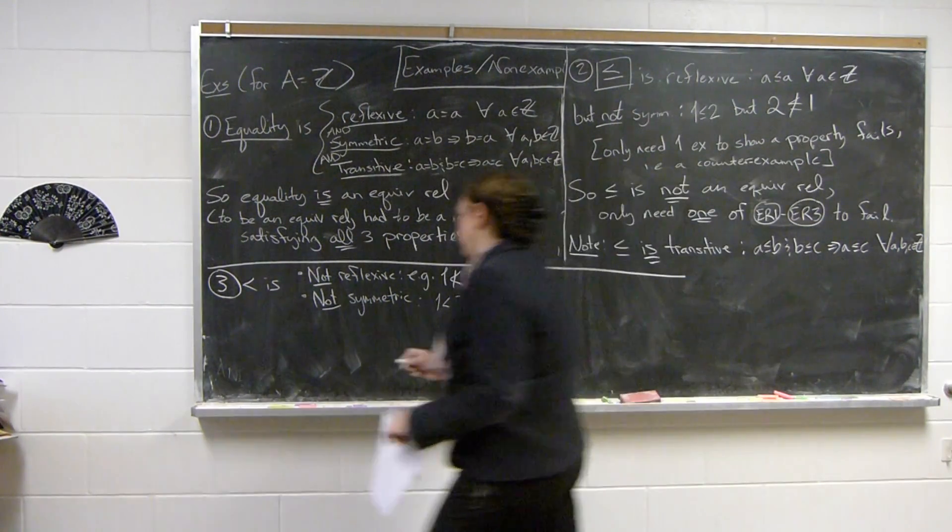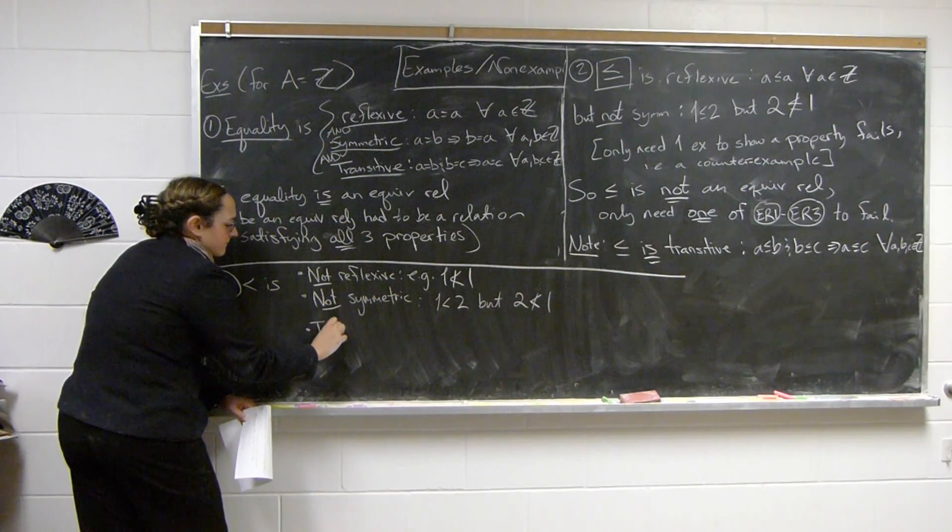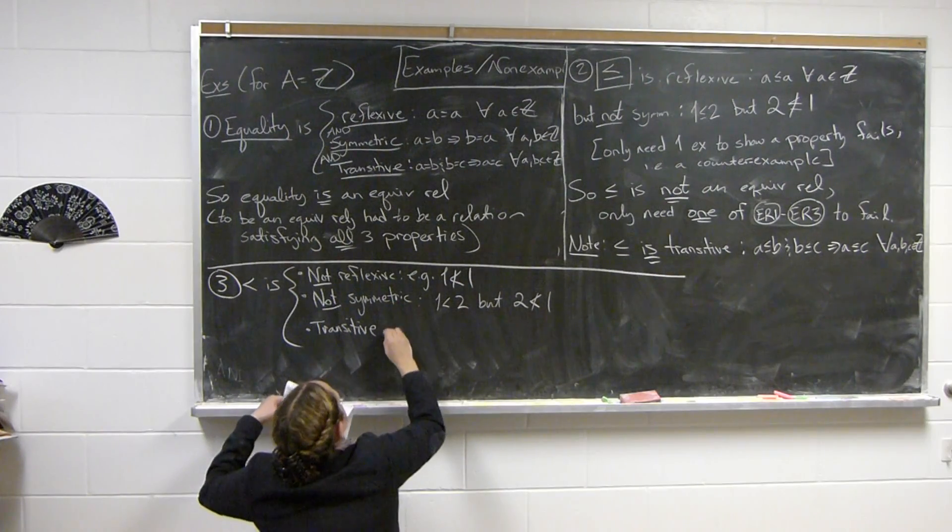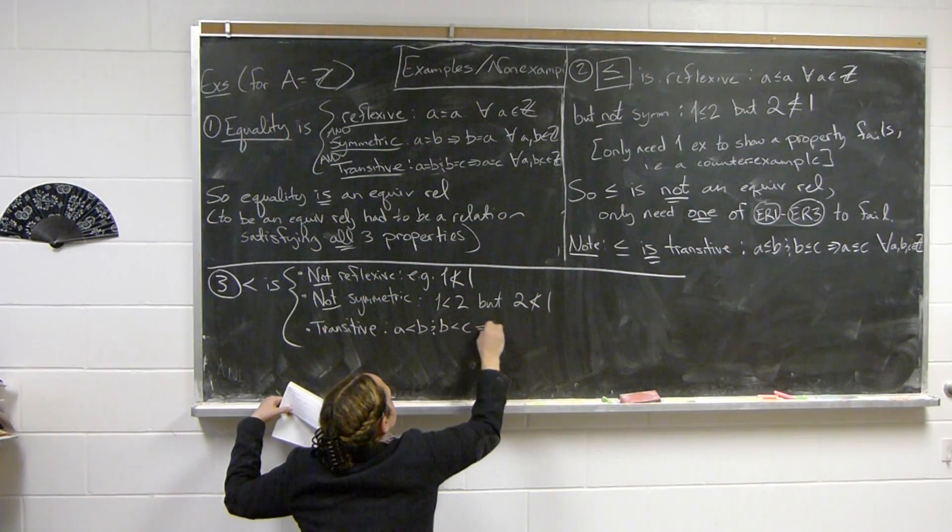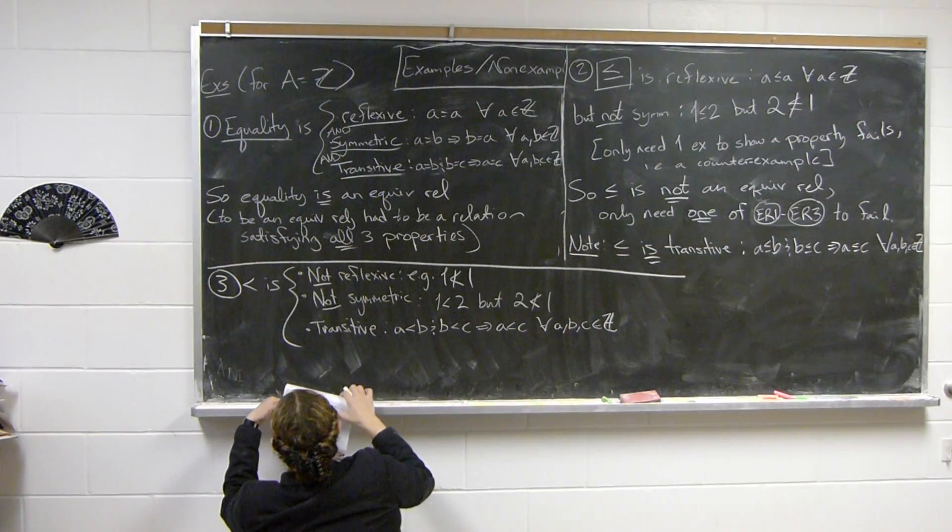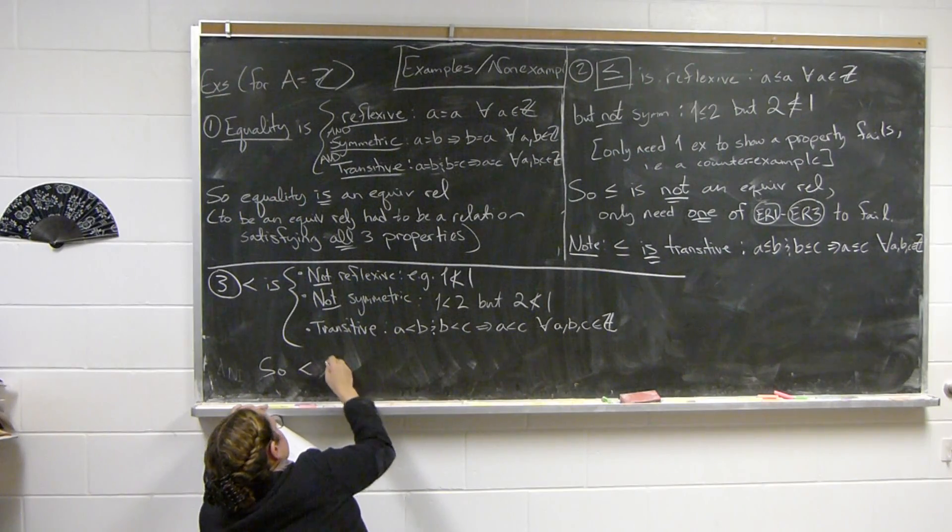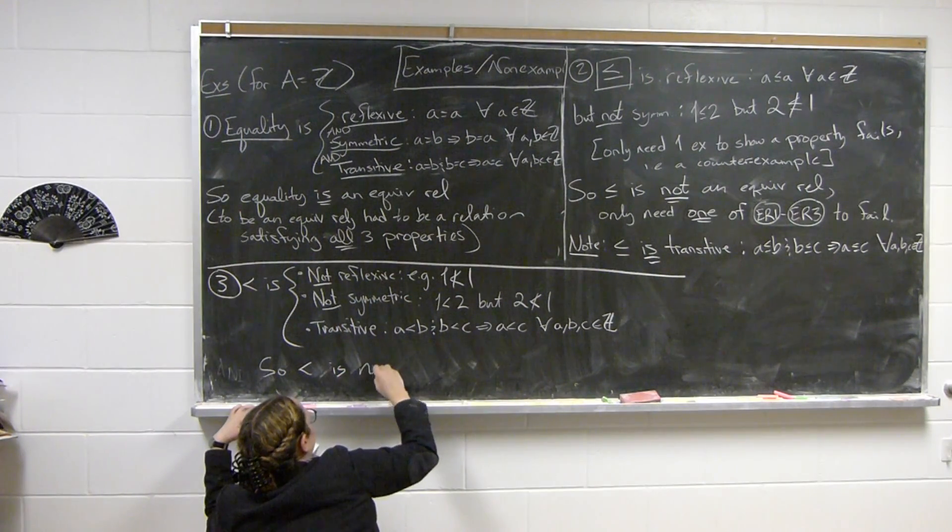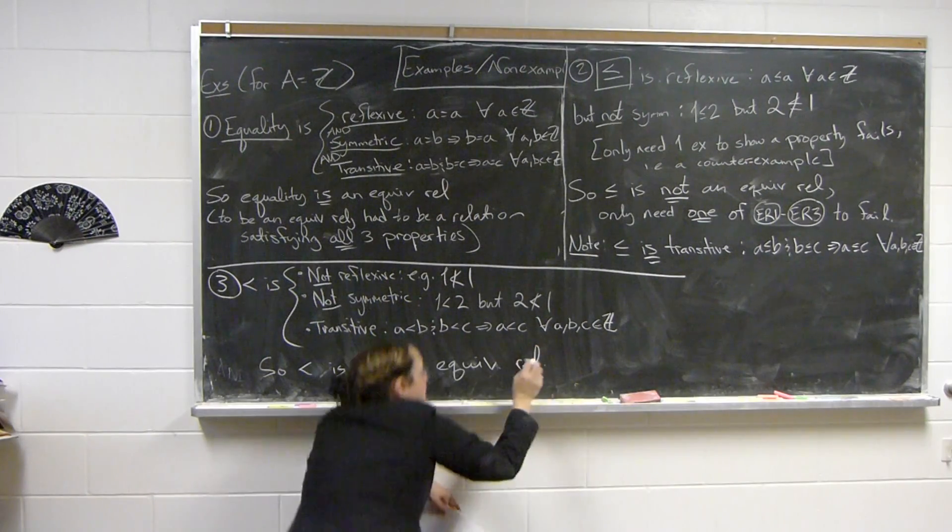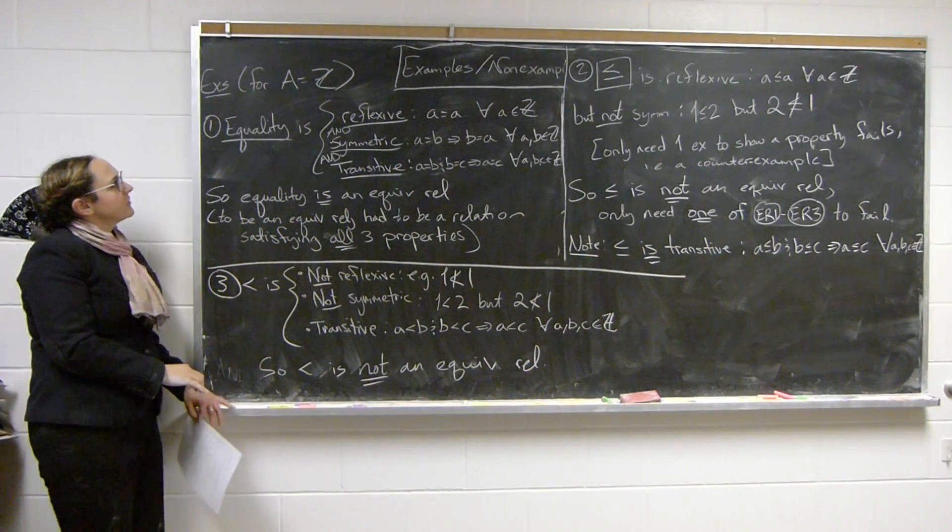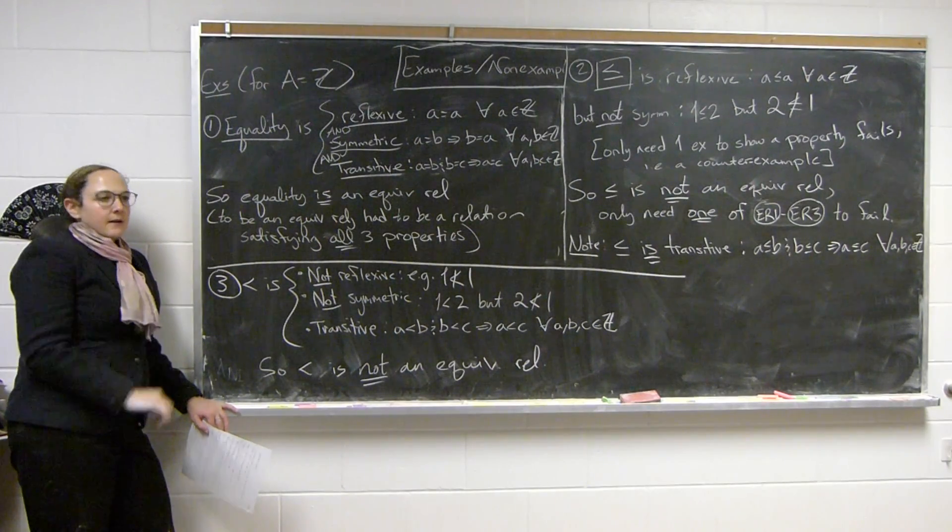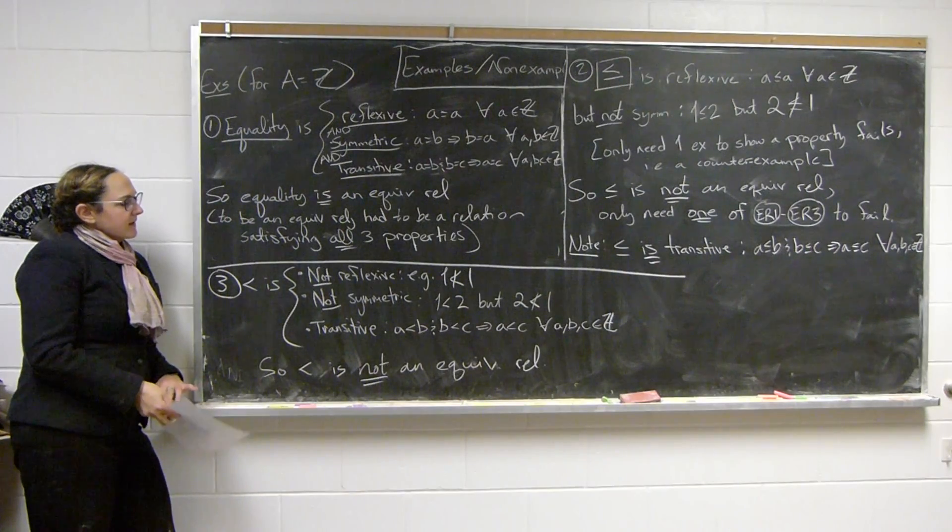It is transitive. So, less than is transitive. Because if we have A is less than B, and B is less than C, then A is less than C for all integers A, B, C. So, this is not an equivalence relation. But we kind of went overboard. We had two that failed. So you can kind of see how different properties do or don't fail. So, in order to prove something's an equivalence relation, you're actually going to have to prove reflexivity, symmetry, and transitivity. As long as you already know that it's a relation, but usually that's kind of straightforward.